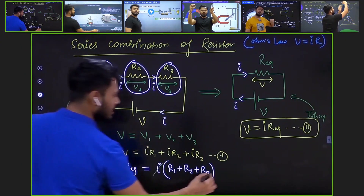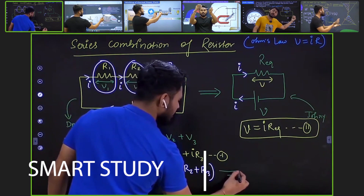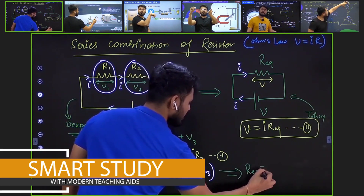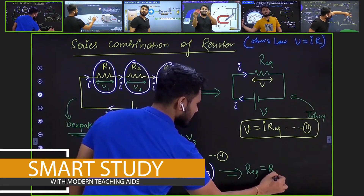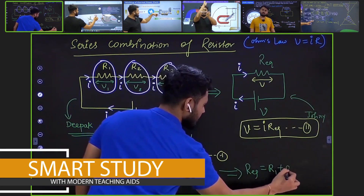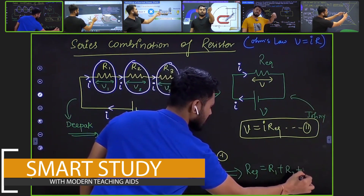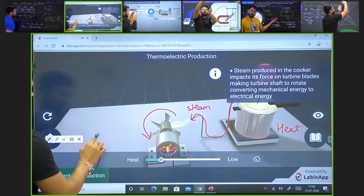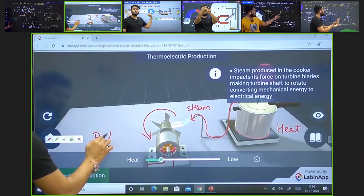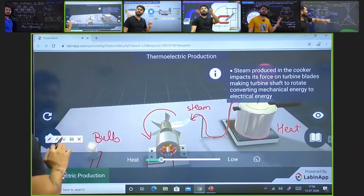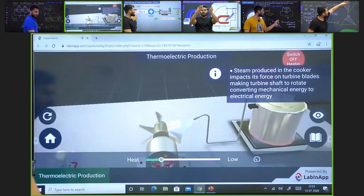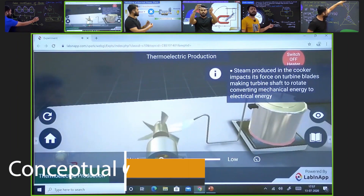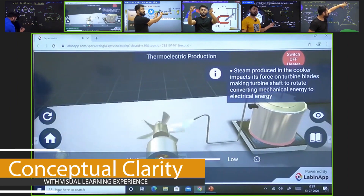And finally, we got R equivalent equal to R1 plus R2 plus R2. Now let's focus on the generator.